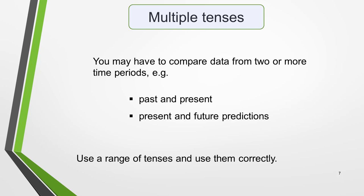Most graphics require you to compare data from two or more time periods — for example, past and present, or present and future predictions — so you'll need to use a range of different tenses in your essay as appropriate. The key word is 'appropriate'. Whilst you'll gain marks for using a good range of tenses, you should never do so just to show how many different tenses you know. Only use the tense that's 100% correct for expressing a specific piece of information. It is accuracy that the examiner is looking for.